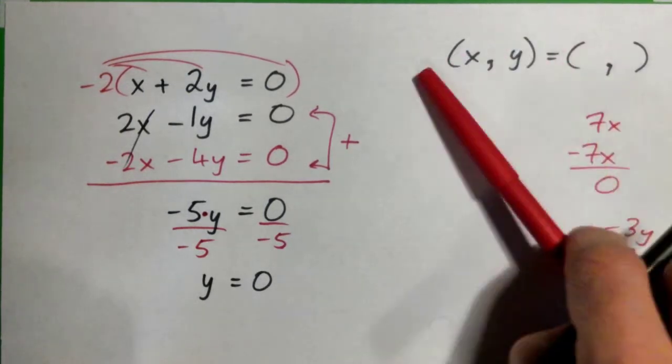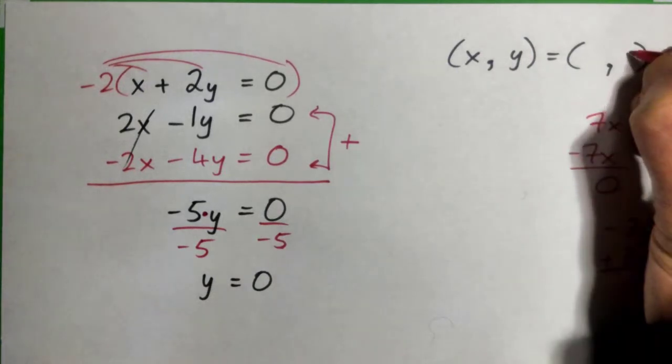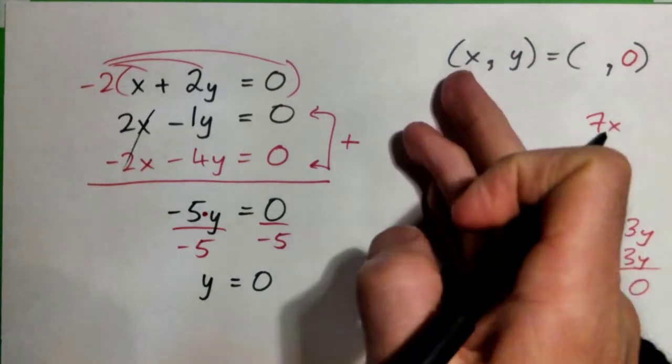We wanted the solution to x and y. We figured out y is 0. We can put that in, y equals 0. So we're halfway there. We have to find x. How do we find x?